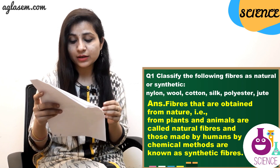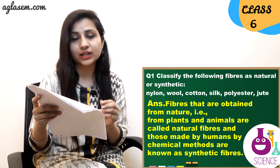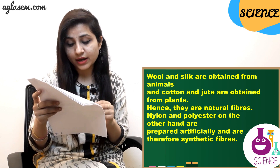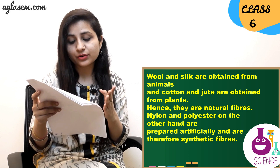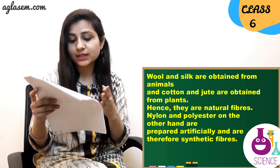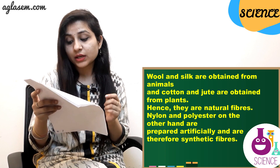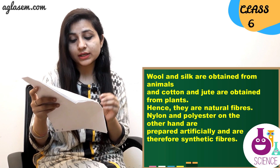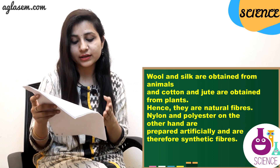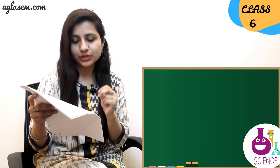Those made by humans using chemical methods are known as synthetic fibers. Wool and silk are obtained from animals, and cotton and jute are obtained from plants — hence they are natural fibers. Nylon and polyester, on the other hand, are prepared artificially and are therefore synthetic fibers.